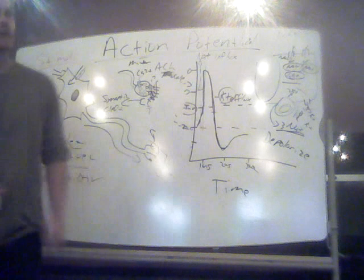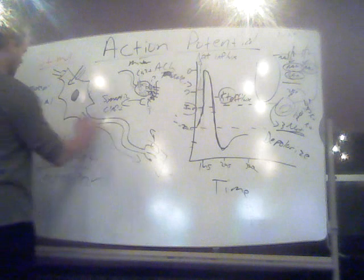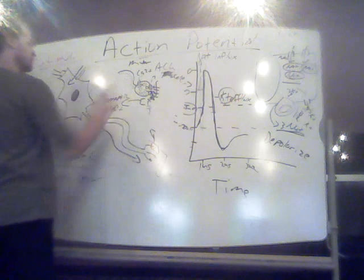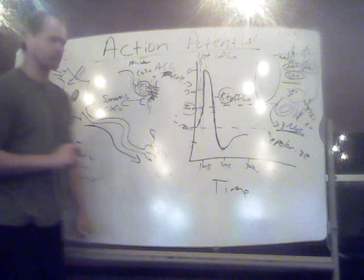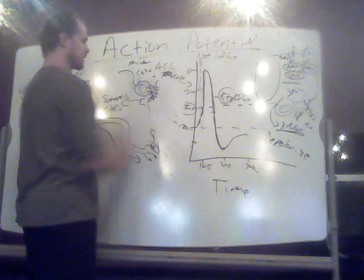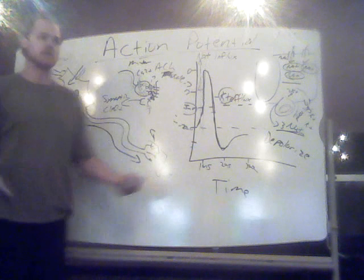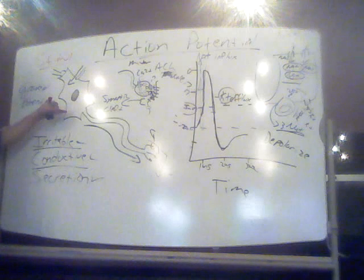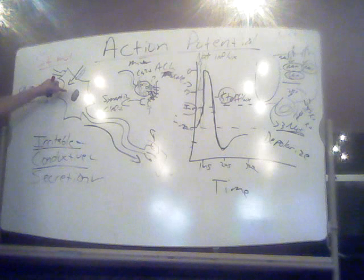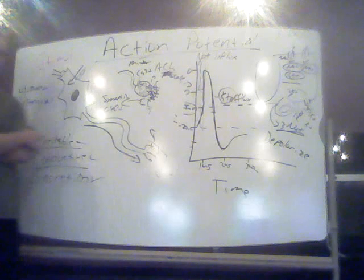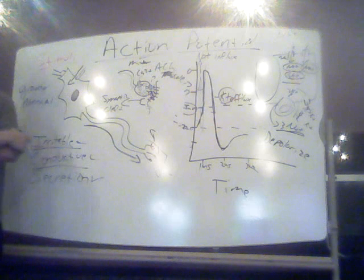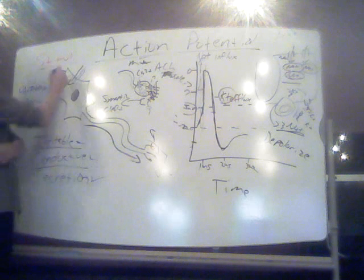That's basically the big reason why we generate these action potentials — to stimulate the release of the specific chemical message, these neurotransmitters, so they can bind to their target tissue and do what they do. If it's with another neuron, they're going to either make it easier for that neuron to depolarize — we call that an excitatory post-synaptic potential (EPSP) — or it's going to make it harder, what we call an inhibitory post-synaptic potential (IPSP).